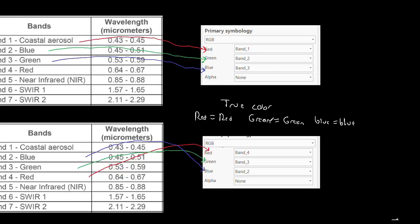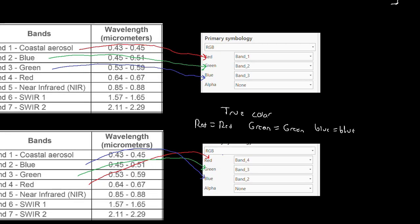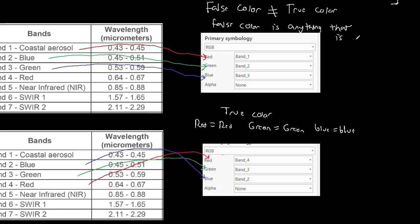Going back to scenario one, where the red display channel is driven by blue wavelengths, the green display channel by blue wavelengths, and the blue display channel by green wavelengths — this also has a name, and it's called false color. False color is basically anything that is not true color. If the wavelength regions don't match the display channels, it's false color.